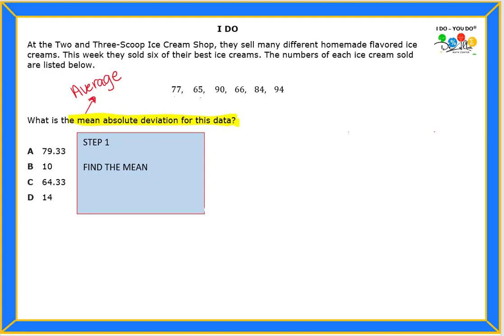So let's start. We're gonna add 77, 65, 90, 66, 84, and 94 and all of that needs to be divided by six. If you want to stop the video so that you guys can start writing your steps and everything, go for it. I'm gonna continue.